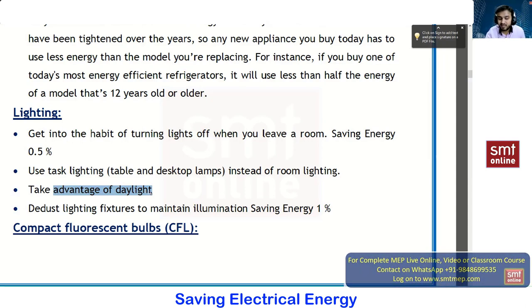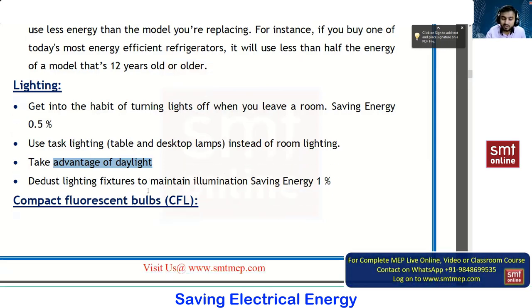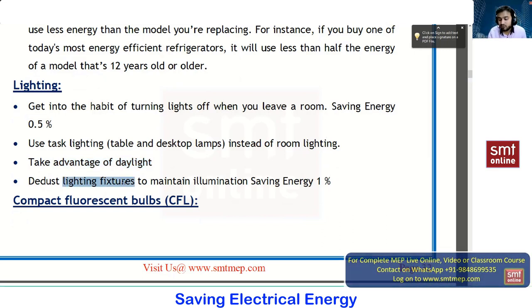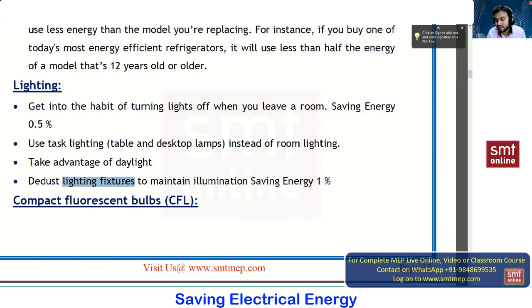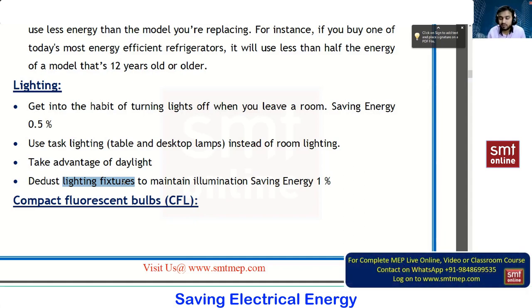Take advantage of daylight also — it is the scope of an architect to provide natural illumination. If you have daylight in your room, there is no requirement for artificial light. Also, de-dust your lighting fixtures every two to three months for maintenance, because due to dust particles the illumination may drop, causing you to install more lights. So these are the points to follow when talking about lighting fixtures.